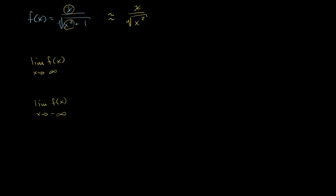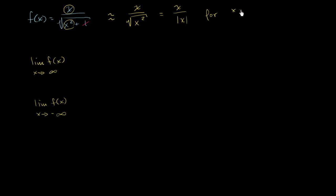This term — the 1 — isn't going to matter so much when we get very, very large x's. And x over the square root of x squared, or x over the principal root of x squared, is going to be equal to x over — if I square something and then take the principal root, remember the principal root is the positive square root — then I'm essentially taking the absolute value of x.